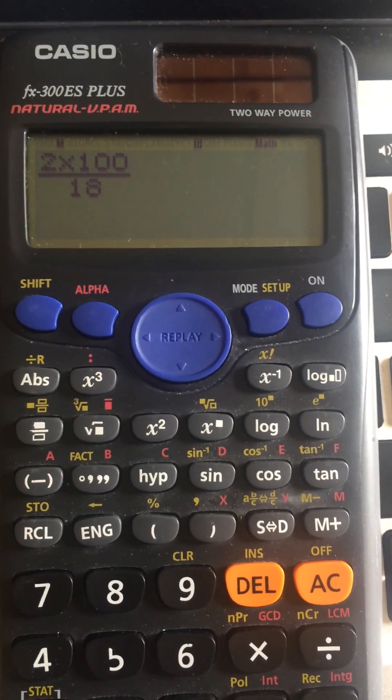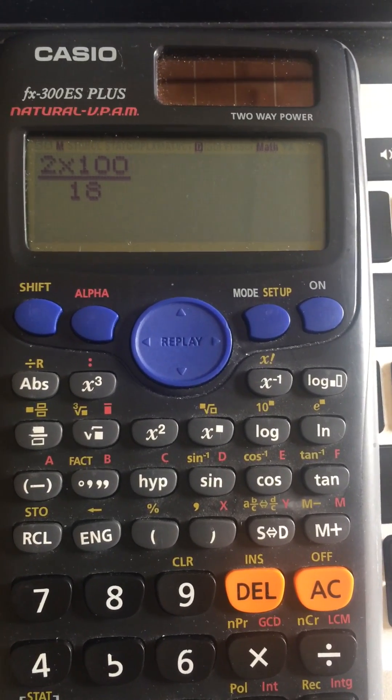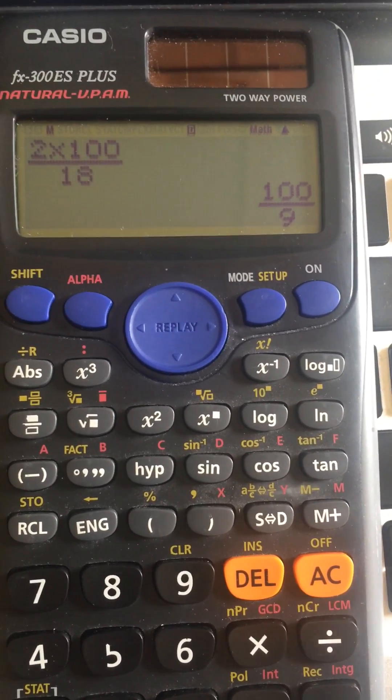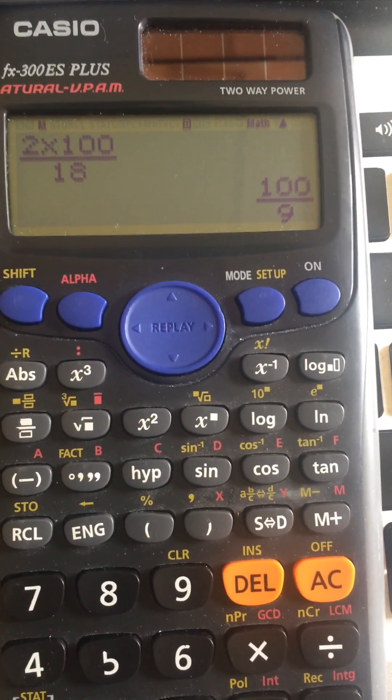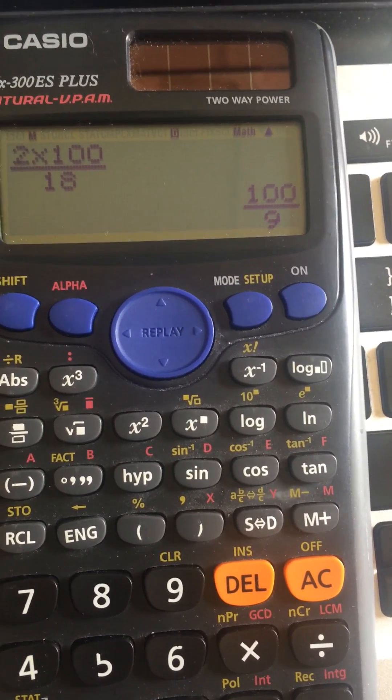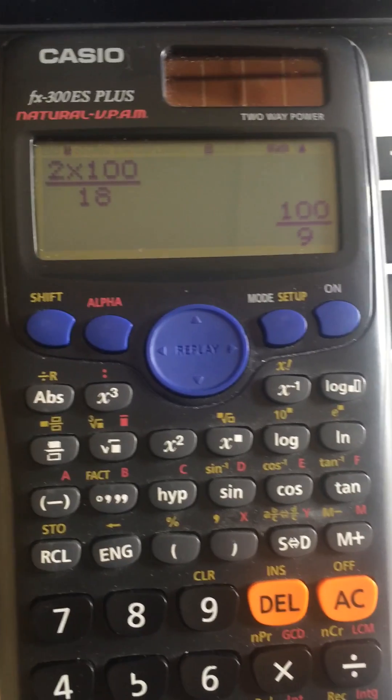I have a fraction here: 2 times 100 divided by 18, and the answer is in fractions. But if I want my answers to be in decimals, how do I convert this fraction 100 over 9 to decimals?